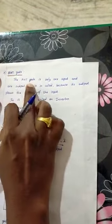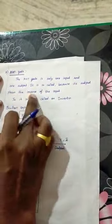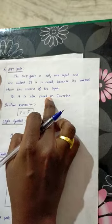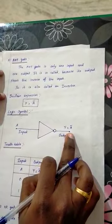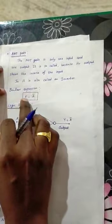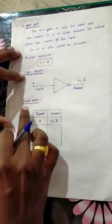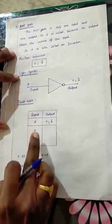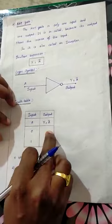Third one NOT gate. The NOT gate is only one input and one output. It is so called because its output shows the inverse of the input so it is also called an inverter. NOT gate input one output one. It is also called inverter. Input output, A level low signal output is high signal.